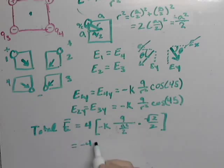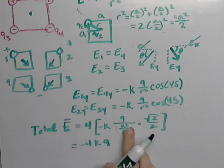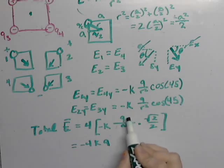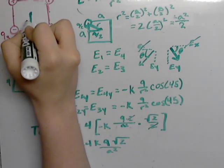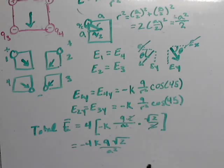This is going to equal negative 4KQ. You can bring this to the top times 2, but then it will cancel with this square root of 2, divided by A squared. And that's our final answer. Our final answer is our total electric field is in the negative Y direction, and it equals negative 4KQ square root of 2 divided by A squared.